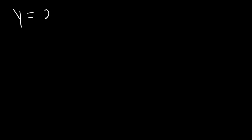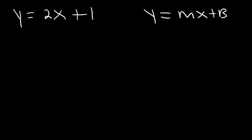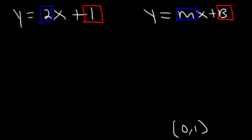Let's say if you're given a linear equation, y equals 2x plus 1. Find the x and y-intercepts and then graph the function. This linear equation is in slope-intercept form — that is, y equals mx plus b form. m is the slope, so the slope in this problem is 2. The y-intercept is b, so we don't have to do anything to solve for it. Therefore, we have the point (0, 1) as the y-intercept.